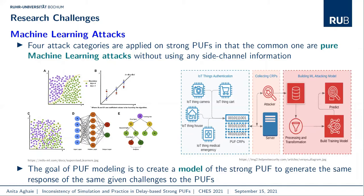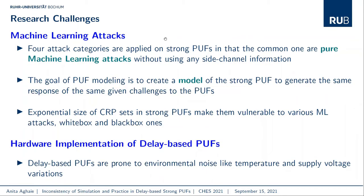Black-box learning algorithms like ANN are also usable in PUF learning. The goal of PUF modeling is to create a model of strong PUFs to generate the same response for a given challenge. We then focus on the next challenging point, which is PUF hardware implementation, especially delay-based ones. The most difficult challenge is to achieve an implementation with physical characteristics close to ideal conditions. Delay-based PUFs are prone to environmental noise like temperature and supply voltage variation.